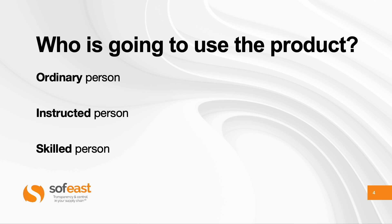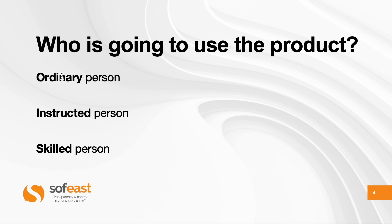Another concept: who is going to use the product? An ordinary person, an instructed person, or a skilled person — this is a very important concept. A skilled person is someone who knows very clearly what the hazards are and has significant experience in how to avoid them. An instructed person has been trained by a skilled person — not just reading a user manual, but actual training or supervision. An ordinary person is everybody else.